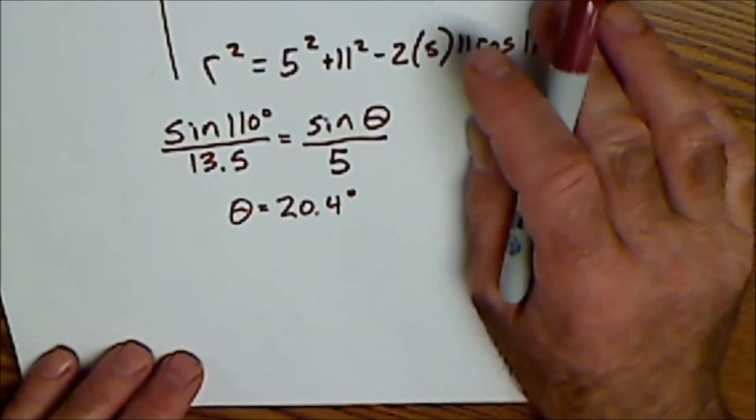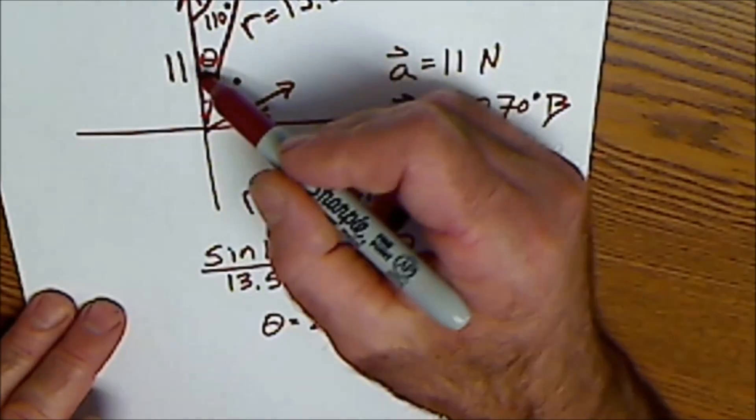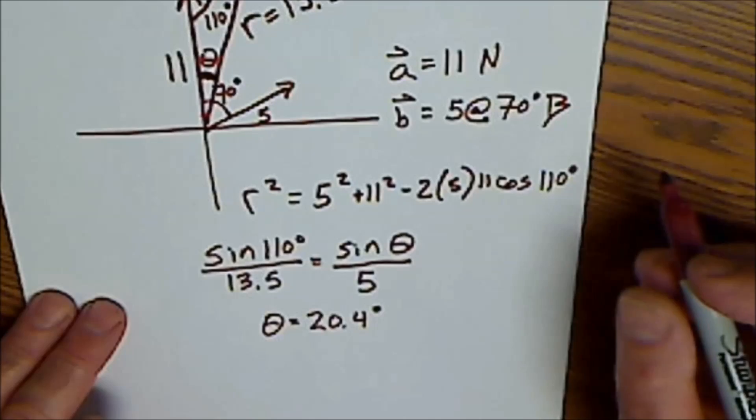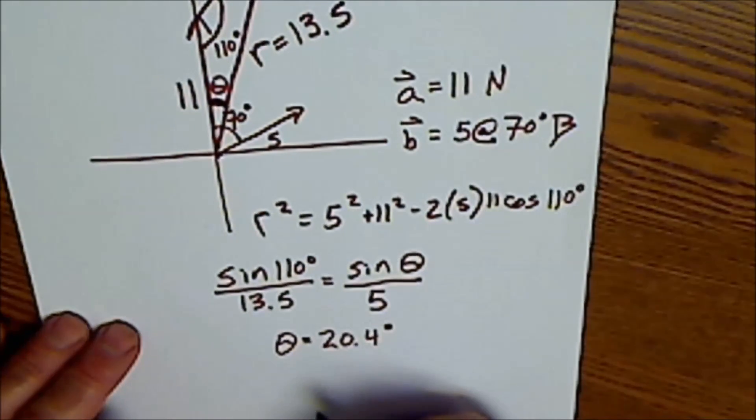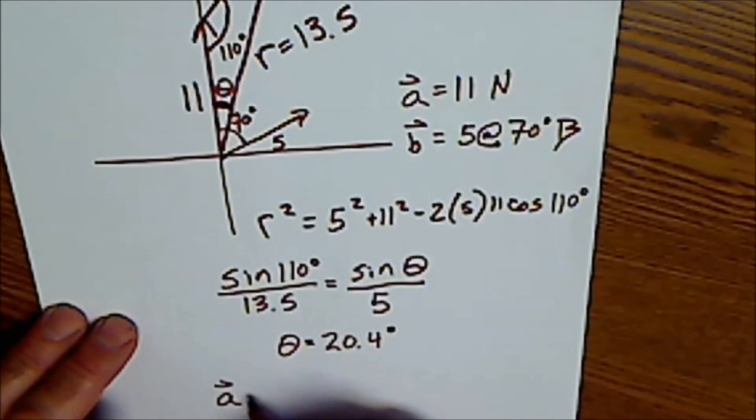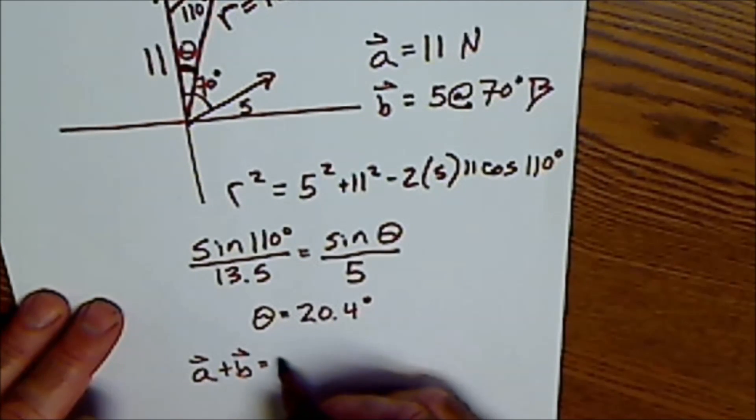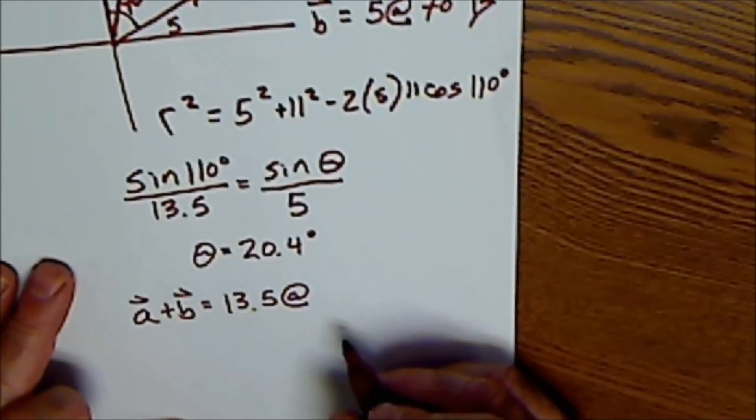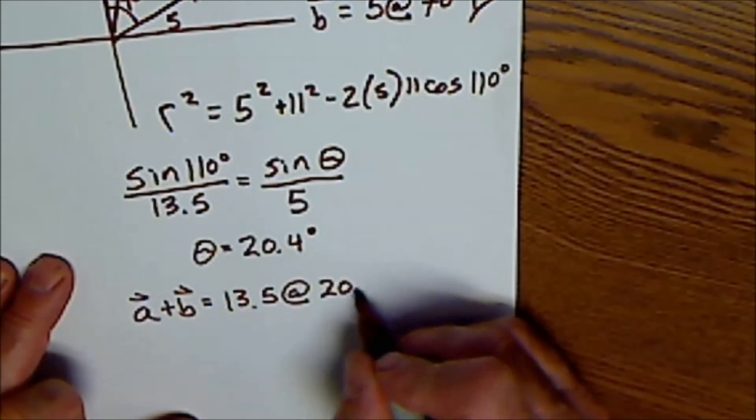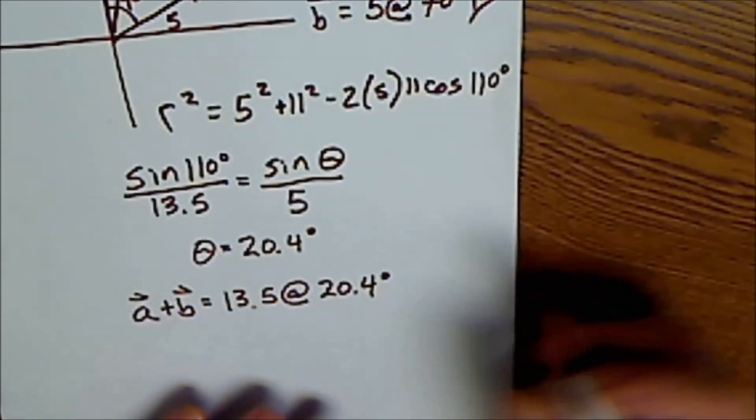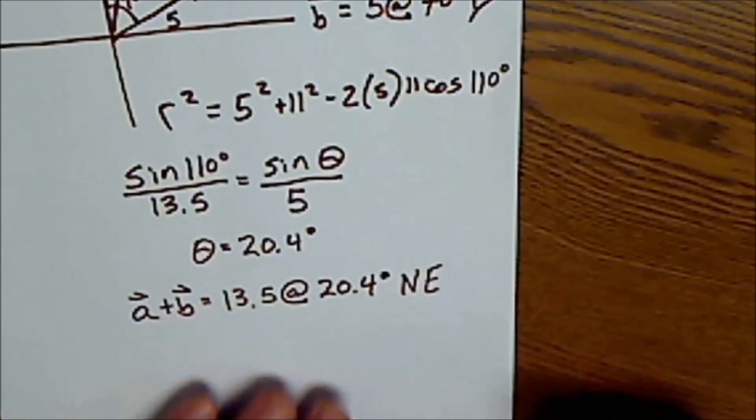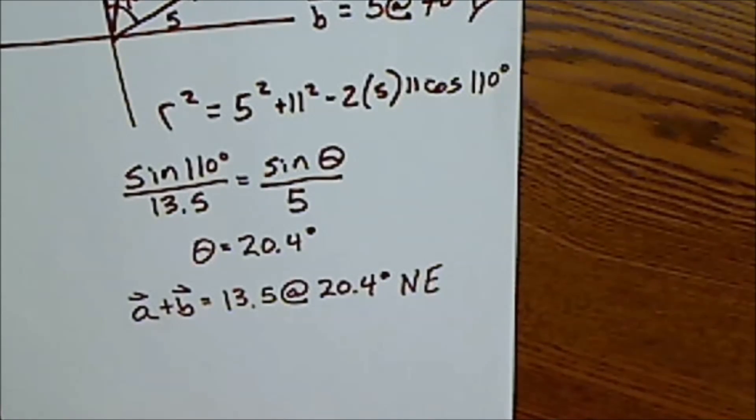So this angle right here is 20.4 degrees. And I also need an answer off of due north. So this angle is that angle in the triangle, but it's also how far I am off of north. So my solution for vector A plus vector B is 13.5 units at an angle of 20.4 degrees. And I have to let the reader know it's a bearing off of north, so I put on there northeast.